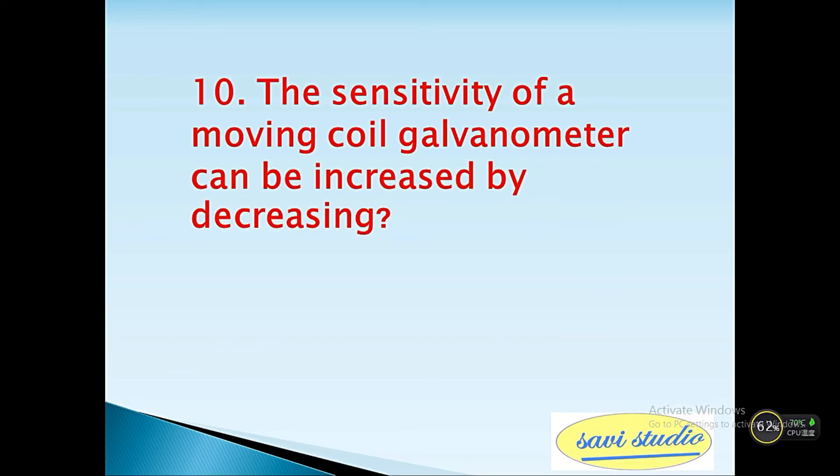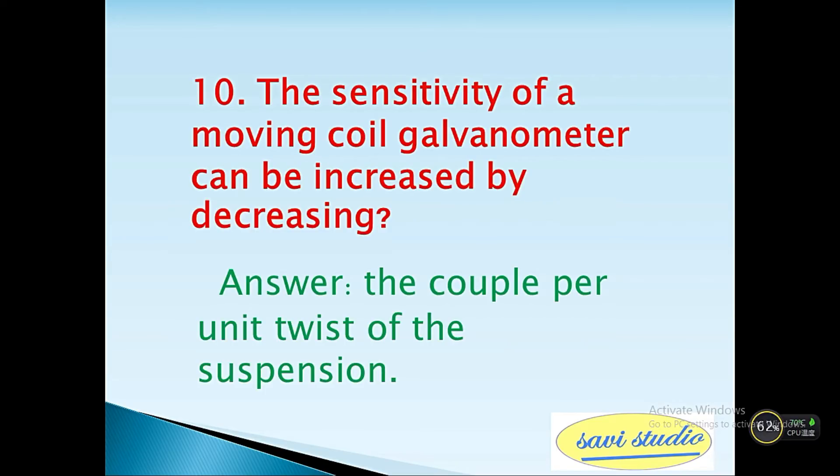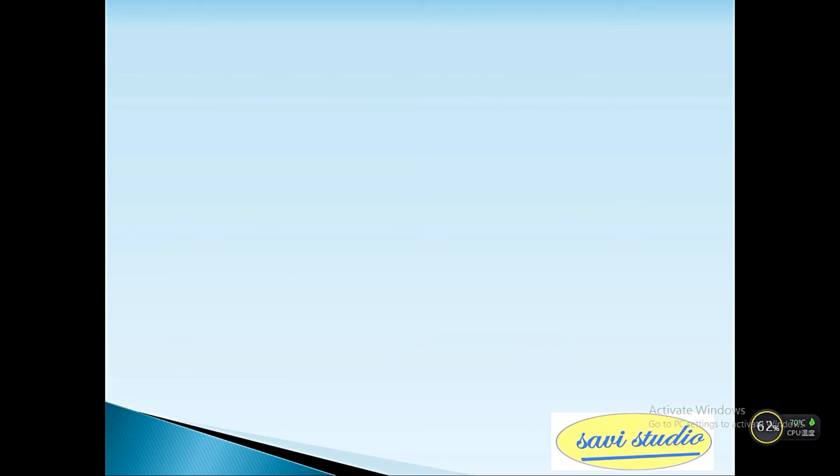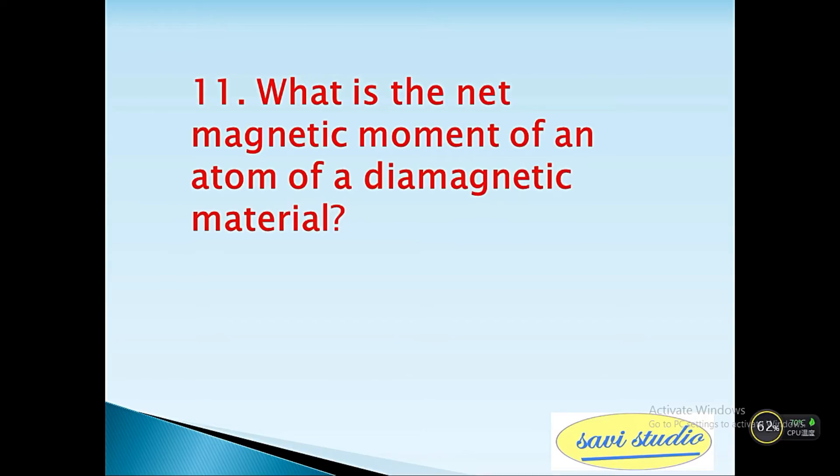Tenth question: The sensitivity of a moving coil galvanometer can be increased by decreasing? Answer: the couple per unit twist of the suspension. 11th question: What is the net magnetic moment of an atom of a diamagnetic material? Answer: 0.